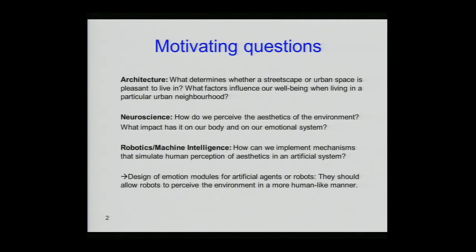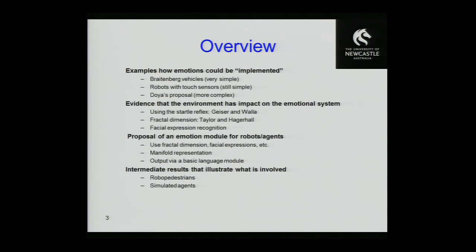The long-term aims of this project are to design and implement a physiologically inspired motion module for a companion robot. If we have this module, we can transfer it in simulation form, simulate an agent, and use it in software for architects so that they can explore their 3D plans in simulation. This presentation covers examples of how emotions could be implemented, evidence that the environment has impact on the emotional system, the proposal of an emotion module for robots, and intermediate results.